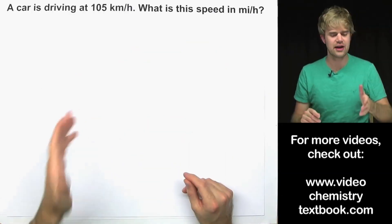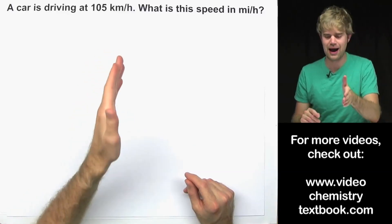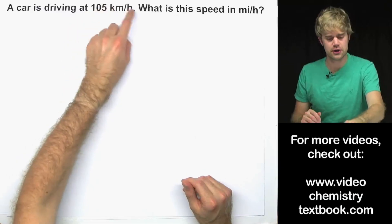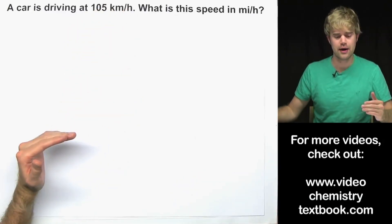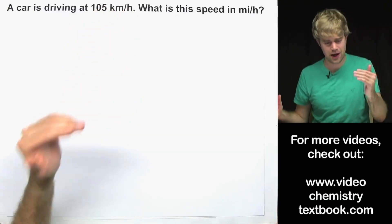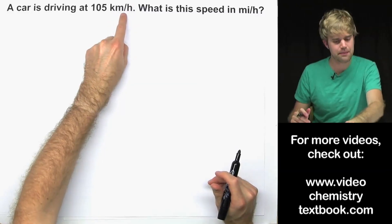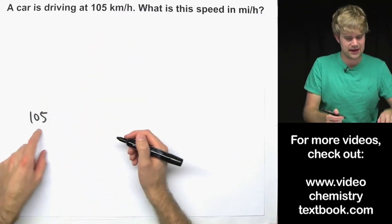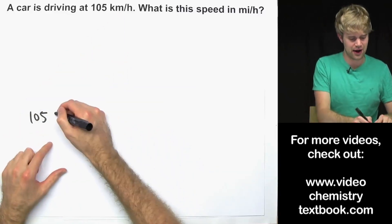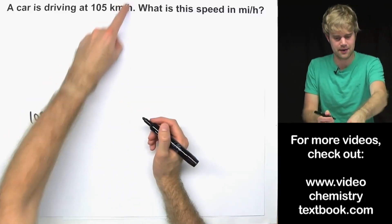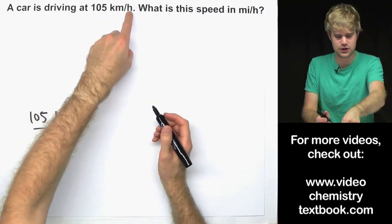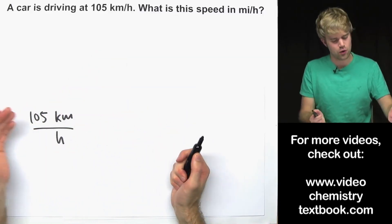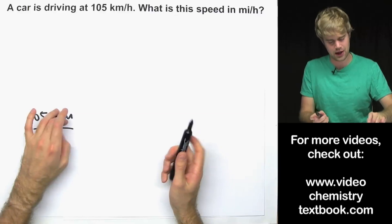A car is driving at 105 kilometers per hour. What is the speed in miles per hour? The units kilometers per hour are part of a fraction — they have a top and a bottom. Sometimes that's not apparent by how it's written, so we want to expand it out: 105 kilometers is on the top, then there's a fraction, and hours is on the bottom. So we're starting with something that has a top and a bottom.